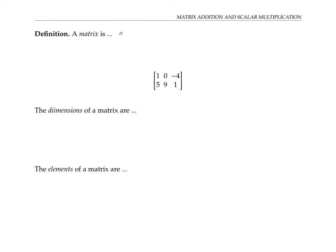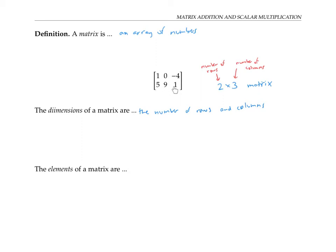Recall that a matrix is just an array of numbers like this one. The dimensions of a matrix are the number of rows and the number of columns. For example, in this matrix above, we have two rows and three columns, so we say that this is a two by three matrix. The number of rows is always listed first. The elements of a matrix are just these individual entries, so this matrix has six elements.